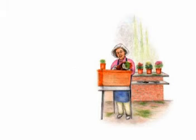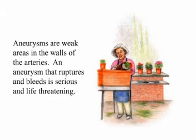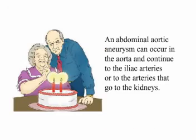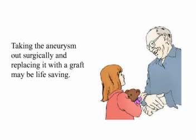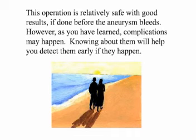Summary: aneurysms are weak areas in the walls of the arteries, and an aneurysm that ruptures and bleeds is serious and life-threatening. An abdominal aortic aneurysm can occur in the aorta and continue to the iliac arteries or the arteries that go to the kidneys. Taking the aneurysm out surgically and replacing it with a graft may be life-saving. This operation is relatively safe with good results if done before the aneurysm bleeds; however, as you have learned, complications may happen — knowing about them will help you detect them early.